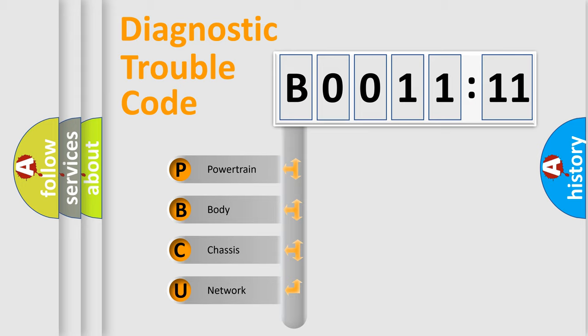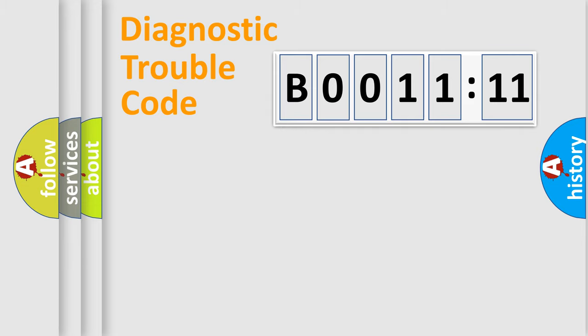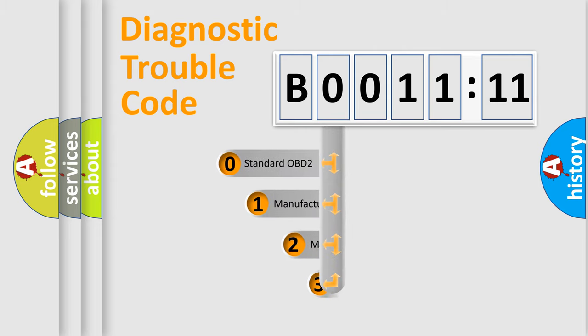We divide the electric system of an automobile into four basic units: Powertrain, Body, Chassis, and Network. This distribution is defined in the first character of the code.